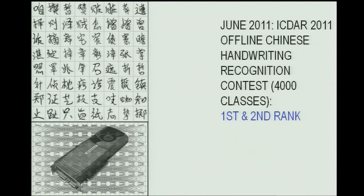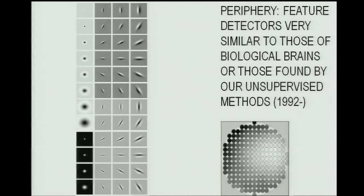Just a while ago, Willy and Dan were instrumental in winning the Chinese handwriting recognition competition, where we used exactly the same approach. That's an interesting problem because unlike MNIST, you have not only ten different patterns but 4,000. We got first and second ranks, just two months ago. And if you look at the details of the feature detectors learned automatically as a byproduct of these deep networks, you'll see the stuff you know from vision research of decades ago.